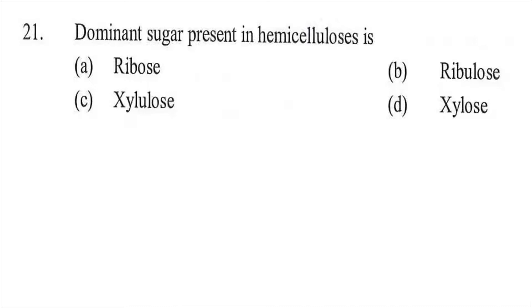Question twenty-one: The dominant sugar present in hemicellulose is — option A ribose, option B ribulose, option C xylulose, or option D xylose. The right answer is D, xylose.